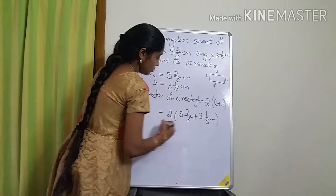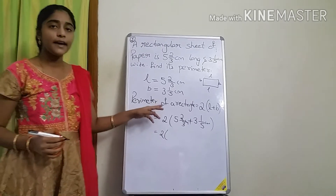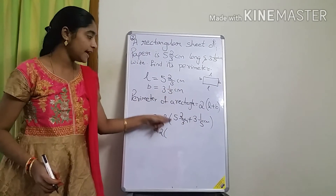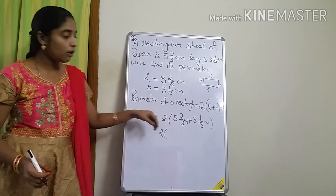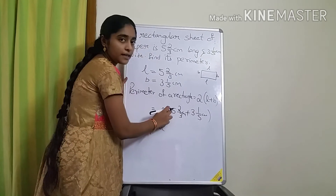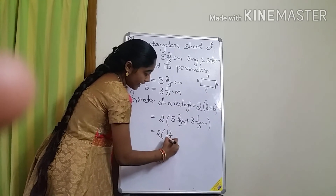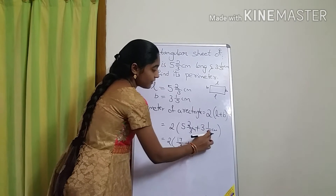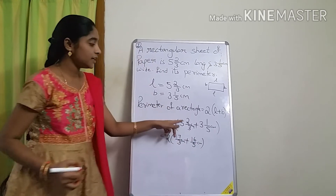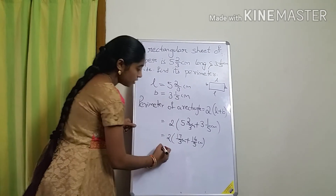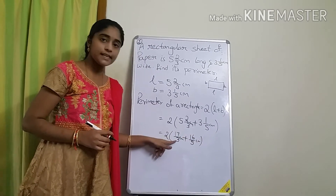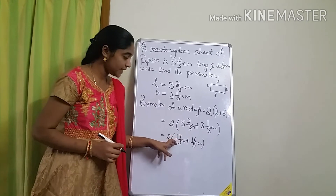We need to add the fractions. Since both are mixed fractions, convert them into improper fractions. 5⅔: 3×5=15, plus 2 = 17, so 17/3. 3⅕: 5×3=15, plus 1 = 16, so 16/5. Now we have 17/3 plus 16/5. The denominators are different — 3 and 5 — so we must find the LCM.